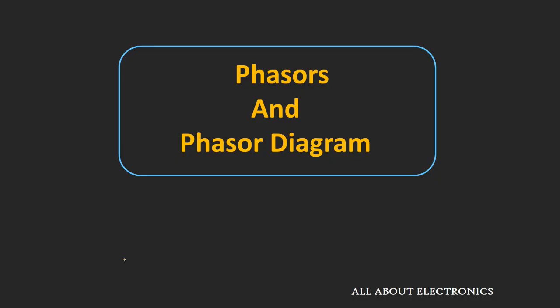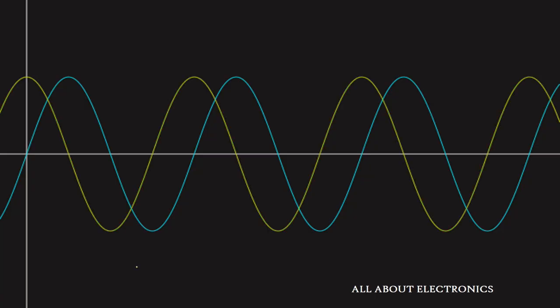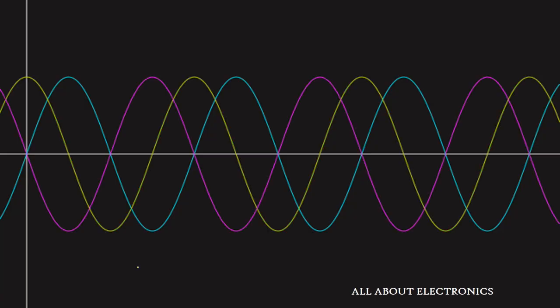Hey friends, welcome to the YouTube channel ALL ABOUT ELECTRONICS. In this video we will learn about the Phasors and the Phasor Diagram. In a very simple way, a Phasor is nothing but a simple way of representing a sinusoidal signal. When we have more than one sinusoidal signal having the same frequency but different phase and different amplitude, we can use the Phasor Diagram to represent the phase difference between these sinusoidal signals.